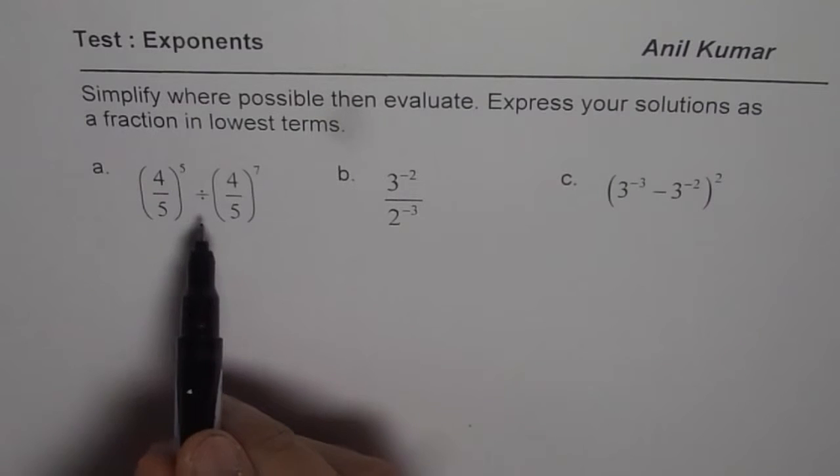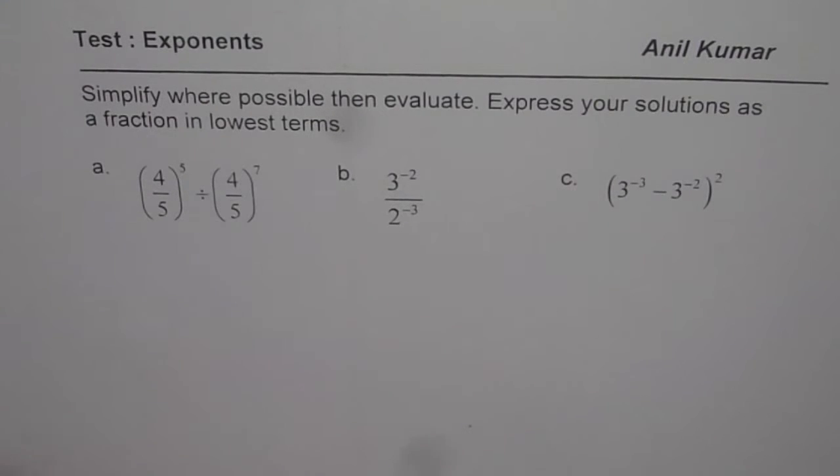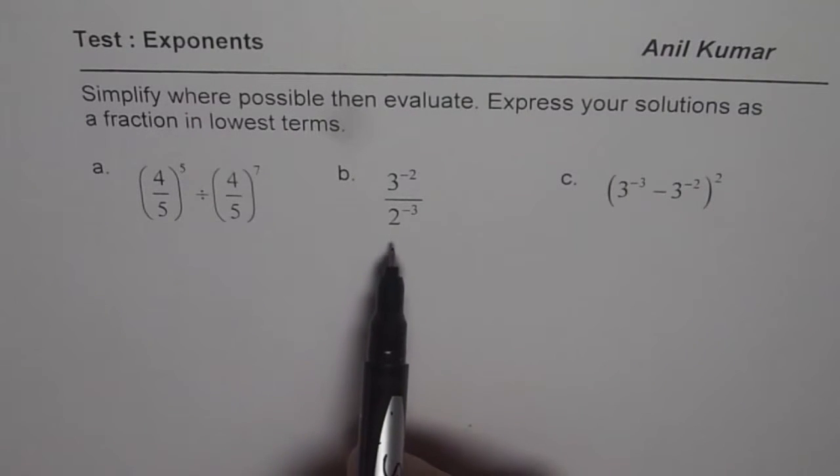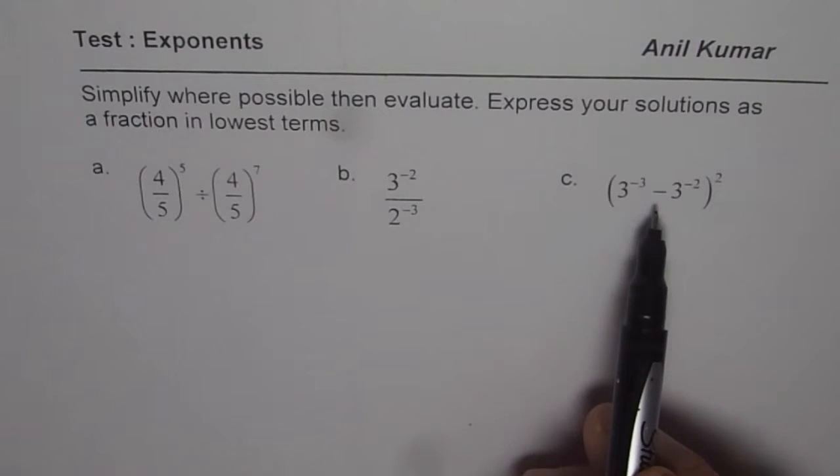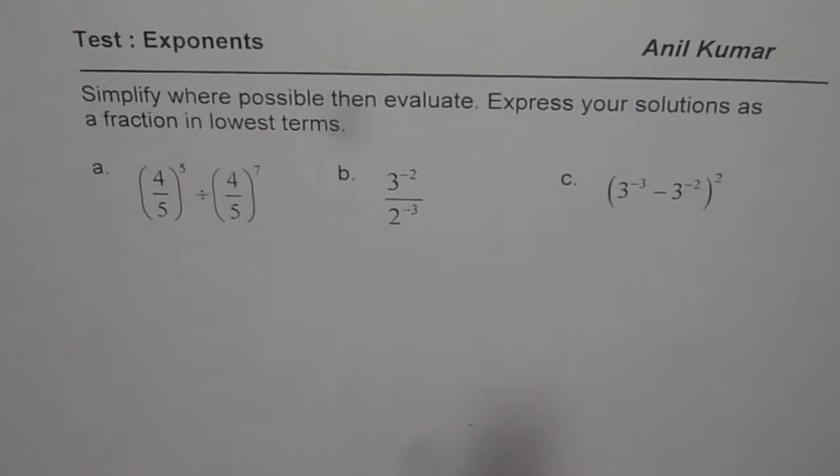Part a: (4/5) to the power of 5 divided by (4/5) to the power of 7. Part b: 3 to the power of minus 2 divided by 2 to the power of minus 3. Part c: (3 to the power of minus 3 minus 3 to the power of minus 2) whole squared. You can pause the video, solve, and then look into my solution.